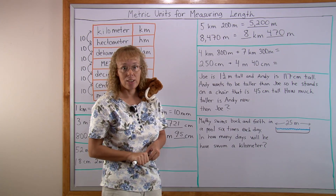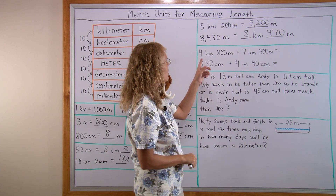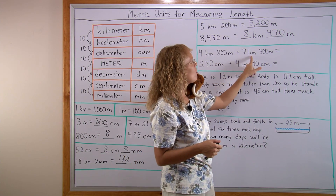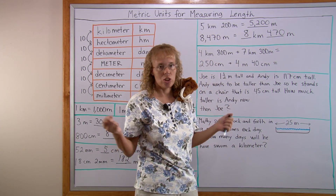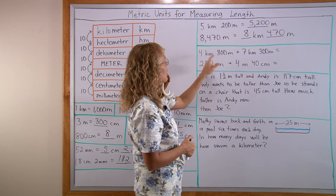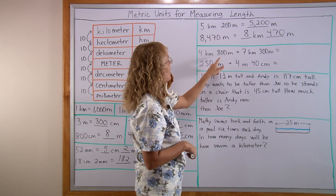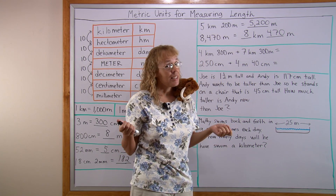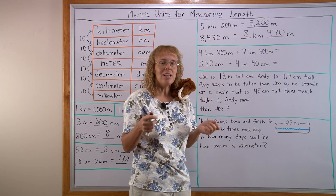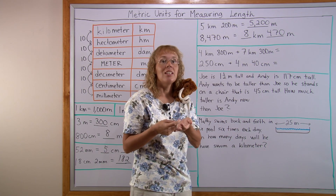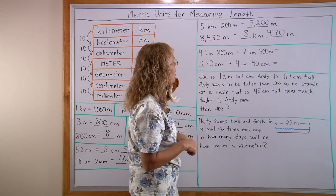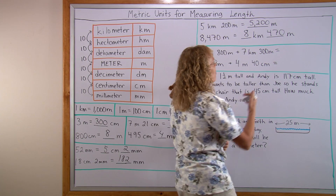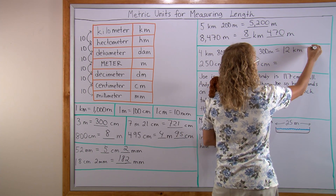Now let's go on to some applications. First, addition: if I have 4 kilometers 800 meters and another distance of 7 kilometers 300 meters, how long is it together? I can add 4 and 7 to get 11 kilometers, and then 800 and 300 meters gives 1,100 meters. But that is more than 1 kilometer — 1,100 meters makes 1 kilometer and 100 meters. So in total we have 11 kilometers plus one more kilometer: 12 kilometers and 100 meters.